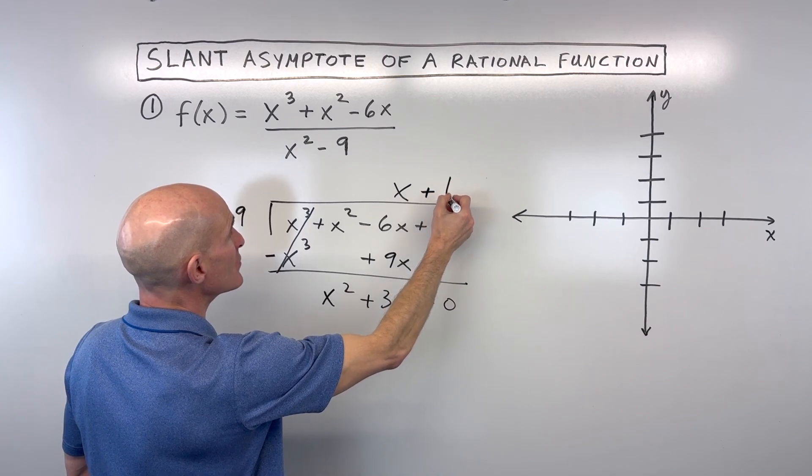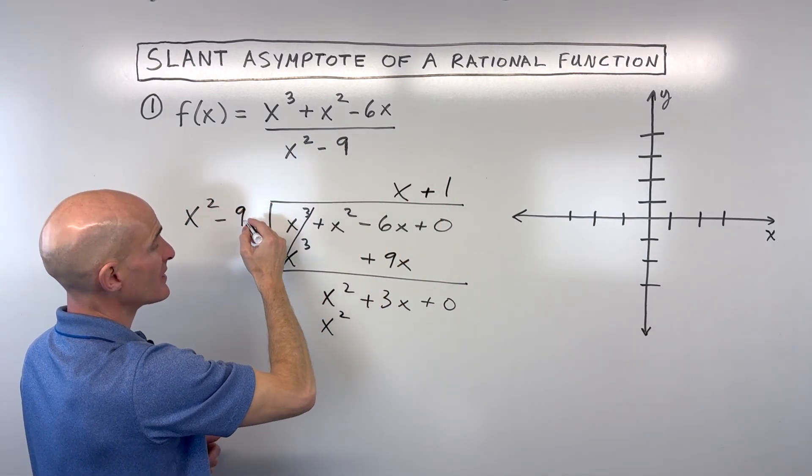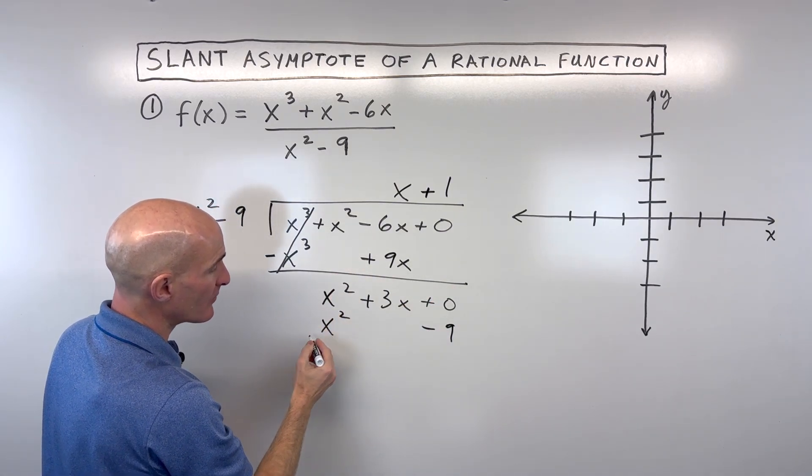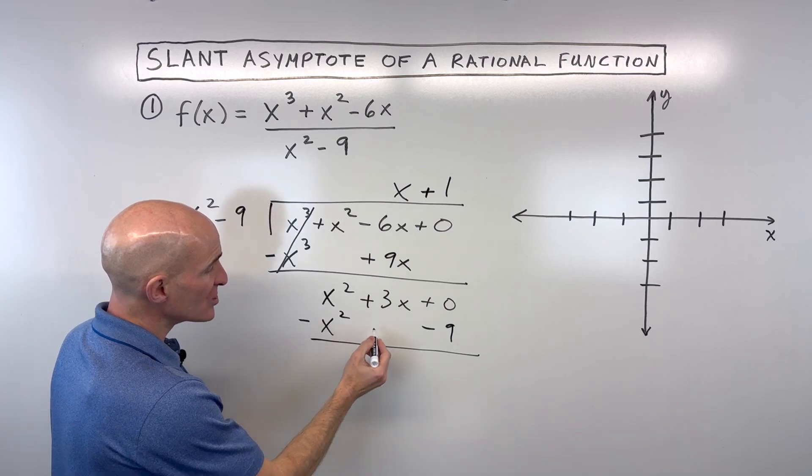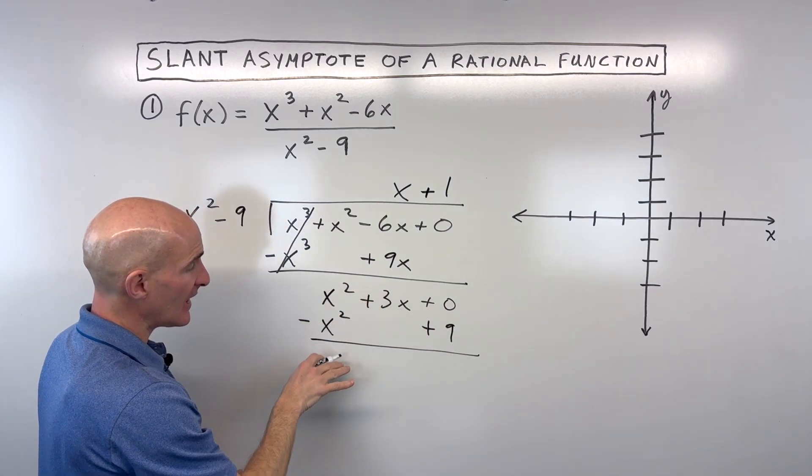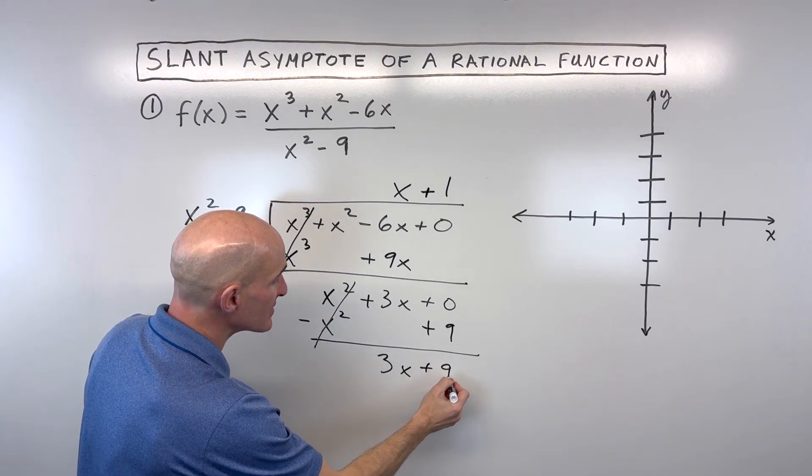In this case, you can see that's going to be 1. So 1 times x squared is x squared, 1 times negative 9 is negative 9. Notice I'm just lining up the like terms. And we're going to subtract, or you can change the signs to the opposite and add straight down. Again, notice that first term cancels out. And we've got 3x plus 9.